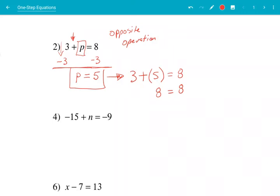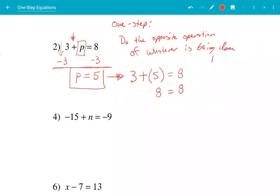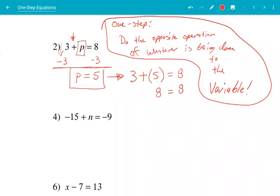There is one step for you to do. And that's just whatever the opposite of what's being done to the p. One-step equations. Just do the opposite operation of whatever is being done to the variable. That's it. One step. Look and see what's being done to the variable. And then do the opposite to it.